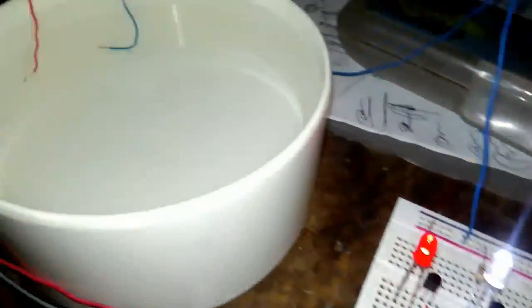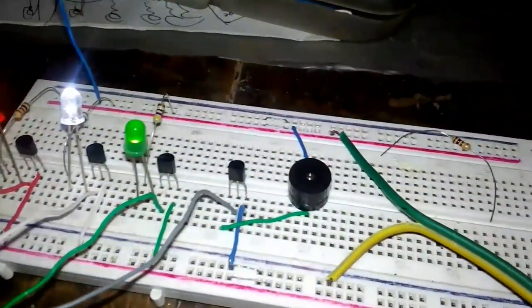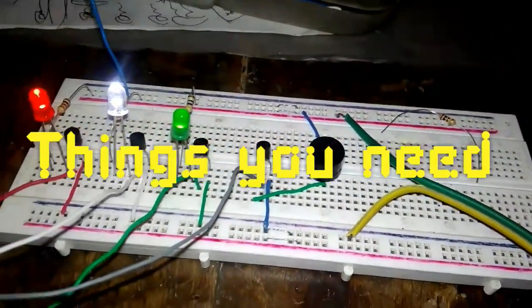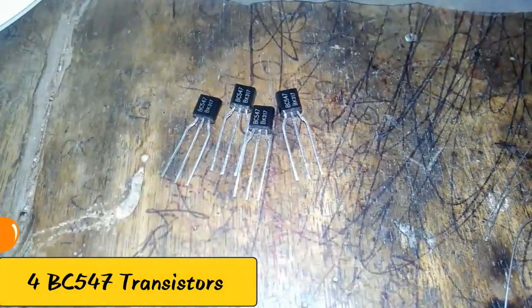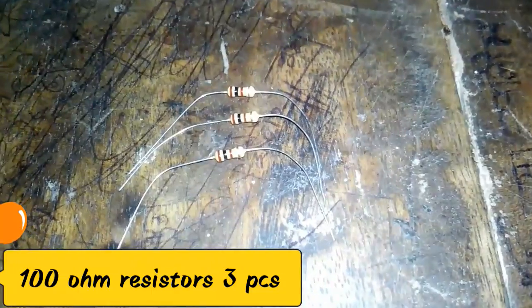Hey guys, today I will show you how to make a water level indicator. The things you need for this project are four BC547 transistors, 100 ohm resistors, 3 pieces.